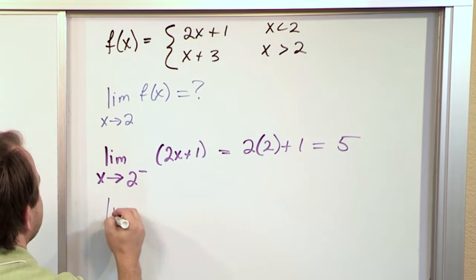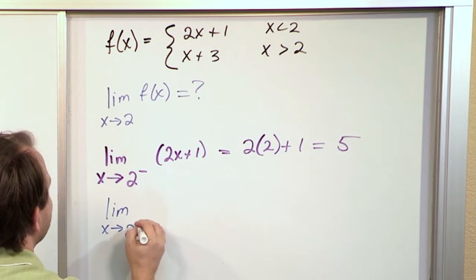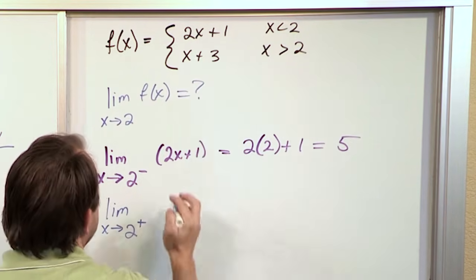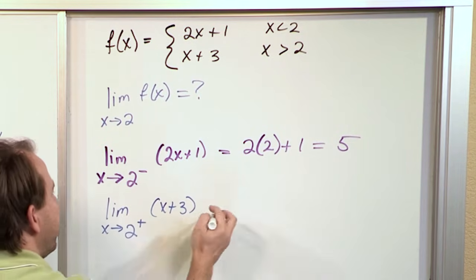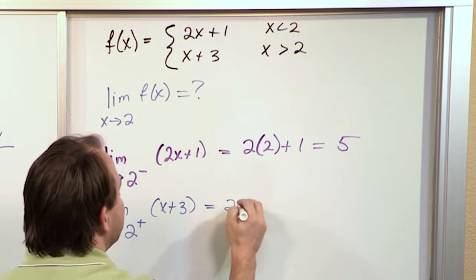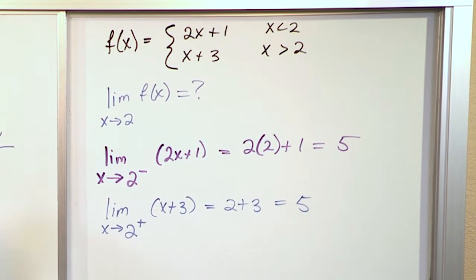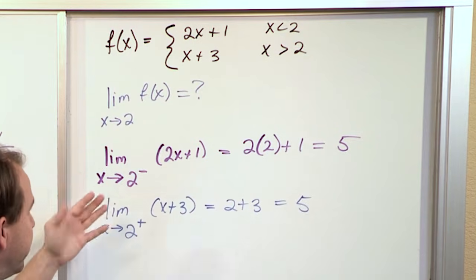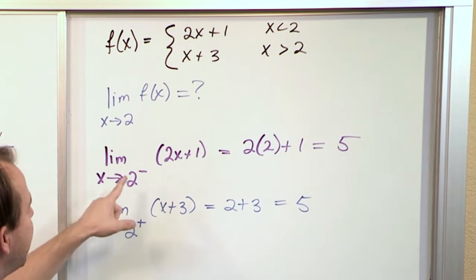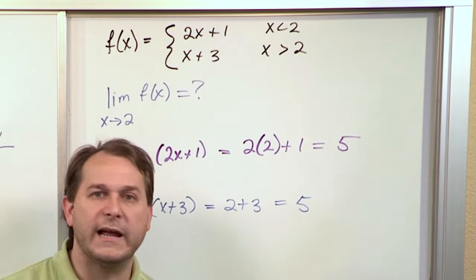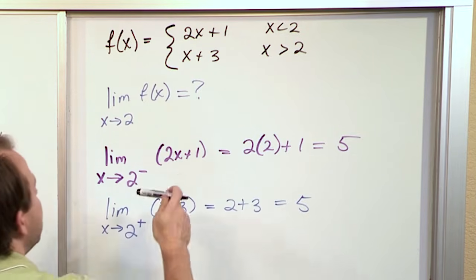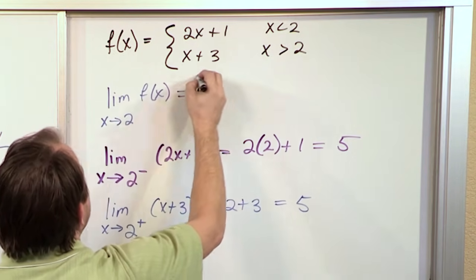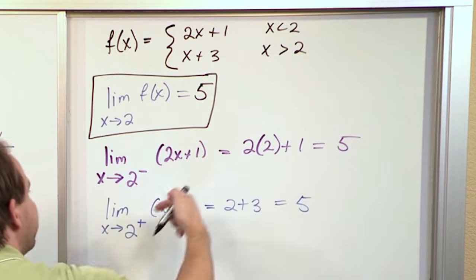Now we approach from the right-hand side. Since we're approaching from values bigger than 2, we use x + 3. Again this is a well-behaved function in that region, so we plug in 2 and get 5. So even though the function looks weird and piecewise-defined, it turns out we approach the exact same value for the limit whether approaching from the left or the right. Therefore, the two-sided limit of this function is equal to 5.